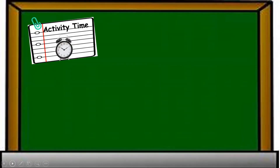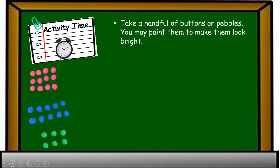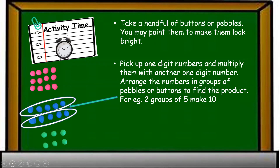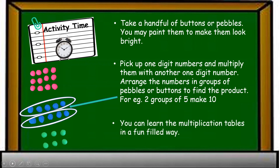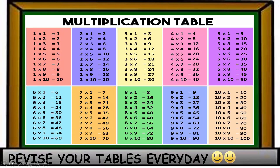Now it's time for an activity! Take a handful of buttons or pebbles — you may paint them to make them look bright. Pick one-digit numbers and multiply them with another one-digit number. Arrange the numbers in groups of pebbles or buttons to find the product. For example, two groups of five make ten. You can learn the multiplication tables in a fun-filled way. And remember, revise your tables every day!